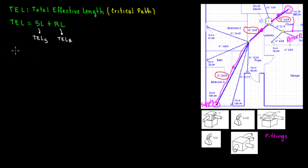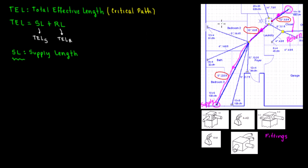Now let's do the calculation of the supply length. The supply length is going to be divided into three parts. On the supply side, the calculation starts right at the equipment and finishes at the farthest supply register.